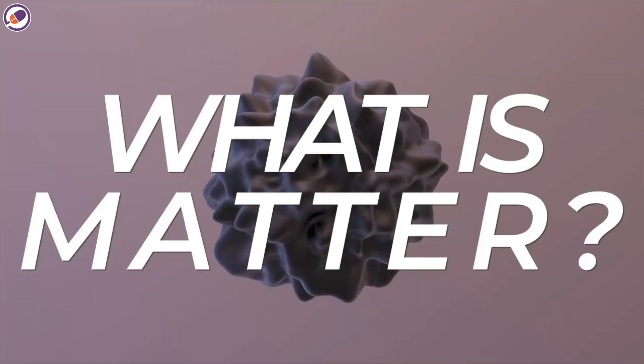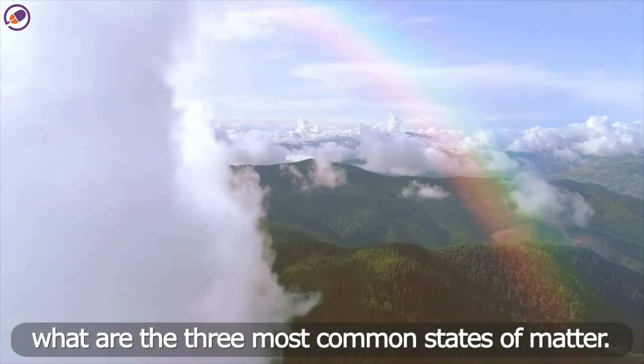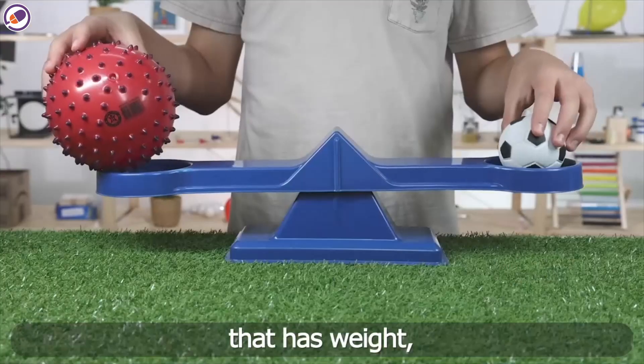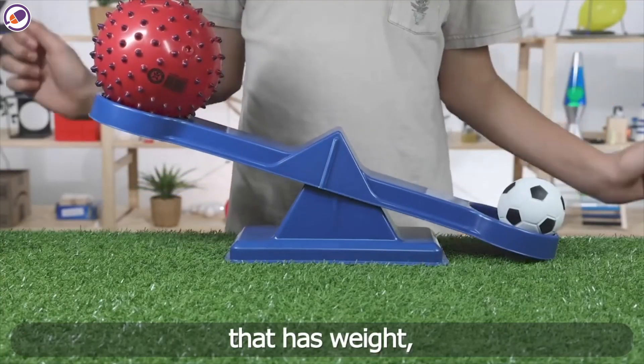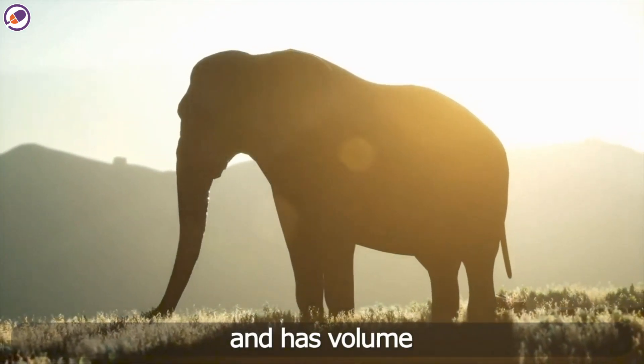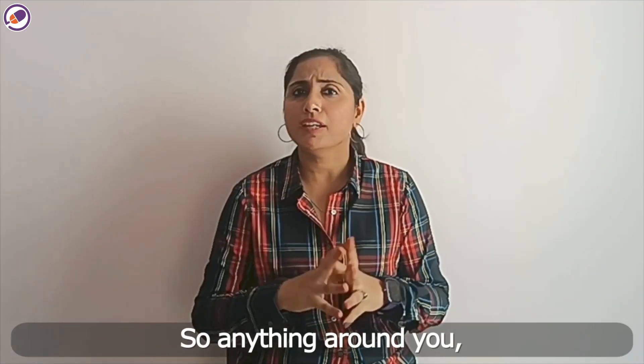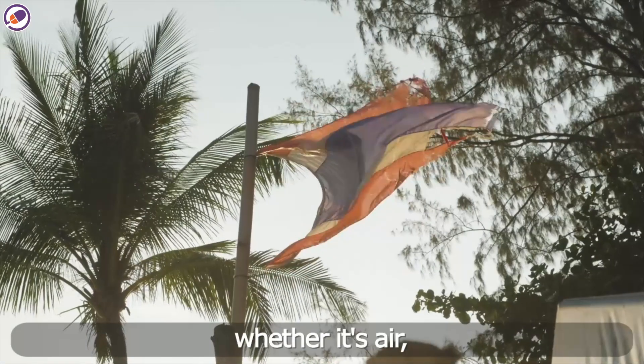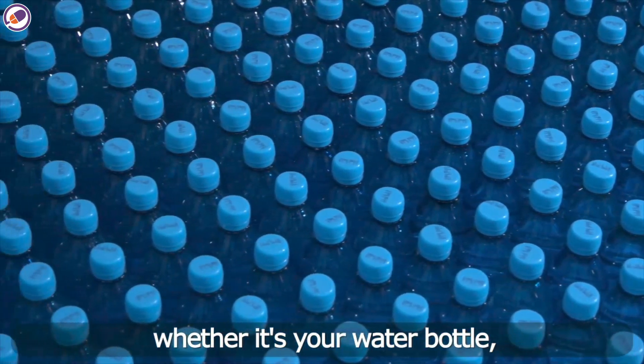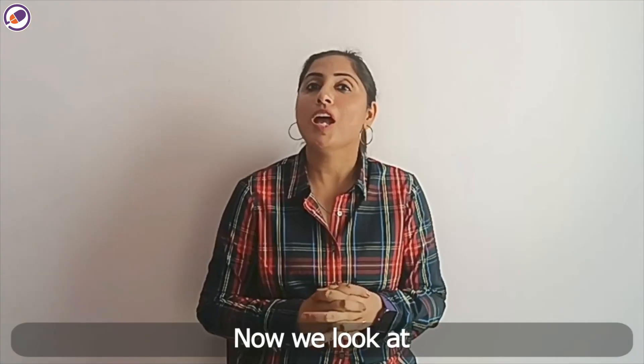Now today we are going to study about what is matter and what are the three most common states of matter. Matter is something that has weight, occupies space, and has volume. Anything around you, whether it's a box, whether it's air, whether it's water, whether it's your water bottle, everything is made up of matter.